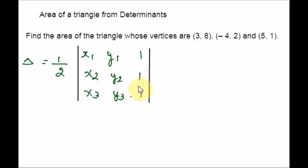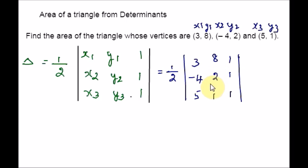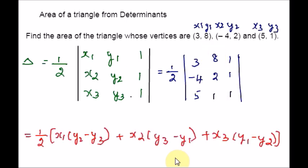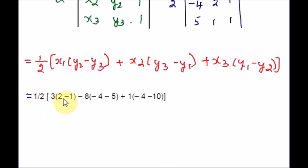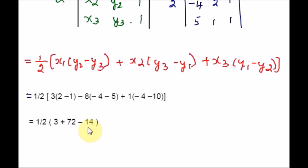So this is how it looks when I plug in all the values. Working out these subtractions and multiplications, I will get one-half times 3 plus 72, and minus minus is plus, minus 10 positive is negative, so negative 14. If I do the calculation, I will get 61. So 61 times one-half equals 61 over 2. The area of the triangle whose vertices are (3,8), (−4,2), and (5,1) is 61 over 2.